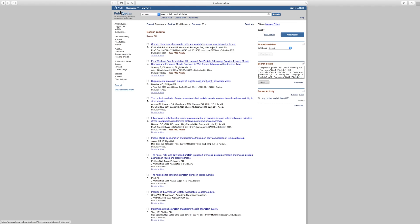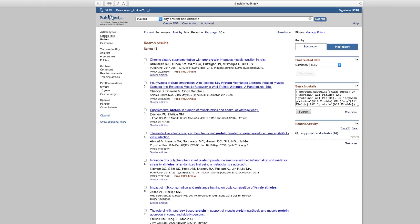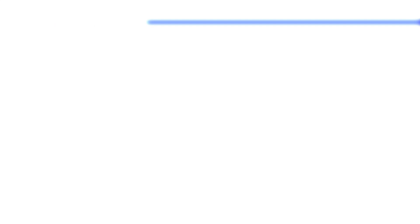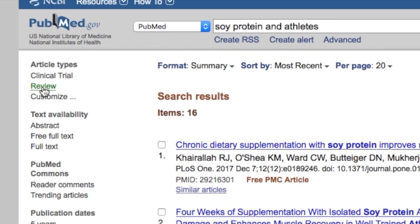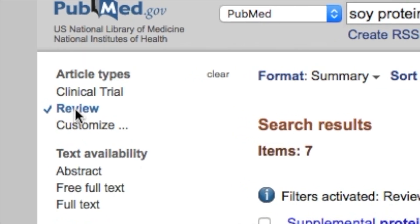However, let's refine this search based on the article type. In the upper left-hand corner, you'll see article types. If you click on review articles, it will refine your search to only include these types of articles.